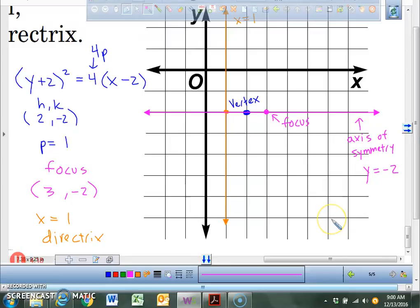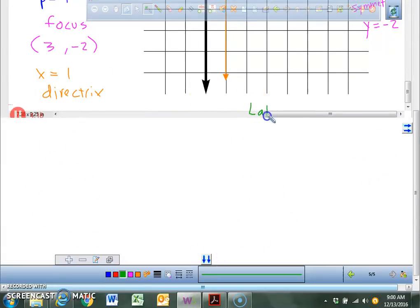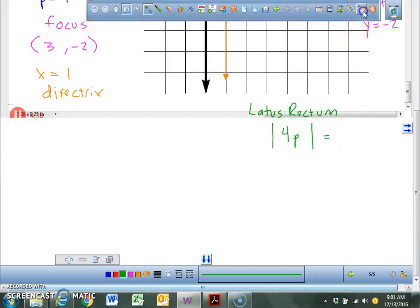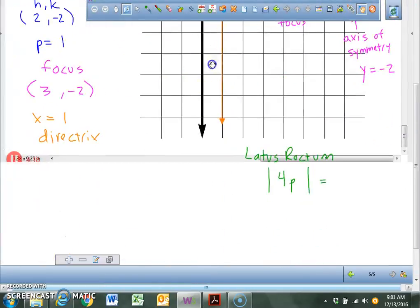Now, the only thing that we have left to graph is what's called the latus rectum. I'm going to do this in green. I'm going to write the words latus rectum. And does anybody know what that is always equal to? The absolute value of 4p. 4p. Very good. By the way, the latus rectum always passes through the focus. By the way, what is our absolute value of 4p equal to? In this particular case, what's our equation say it's equal to? 4. So put the latus rectum is equal to 4 units.